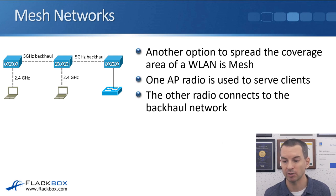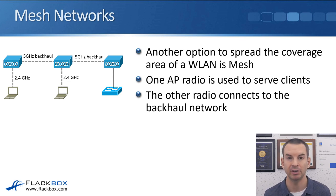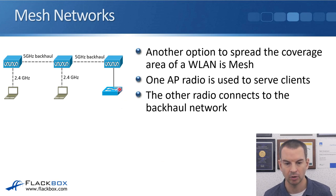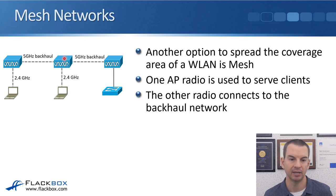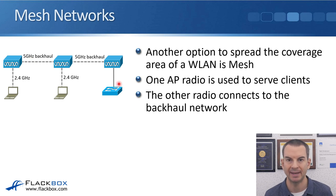The last one is mesh networks. Mesh networks are becoming very popular in home networks. This is another option to spread the coverage area of a wireless LAN. One AP radio is used to serve clients, and the other radio in the AP connects to the backhaul network. We've got a main switch connected to an AP, then a backhaul on the 5 GHz radio to another AP, and then another backhaul to another AP — this can extend the coverage area, giving you a large wireless coverage area still connected into your wired network.